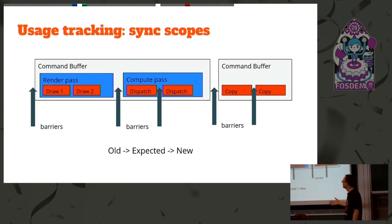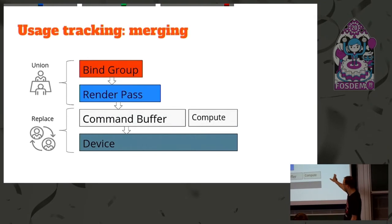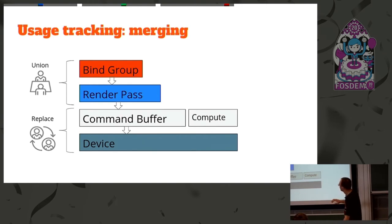We may introduce an option to have compute pass as a single scope — it's not a big deal for us but it affects you. When we patch between those scopes, we know where each scope expects the usage to be, and we patch between those. The bind group and render pass usages are all combined — they can be mutated inside. The command buffer and device usages are transitioned one from another. What we were trying hard to express using the Rust type system is this different logic.